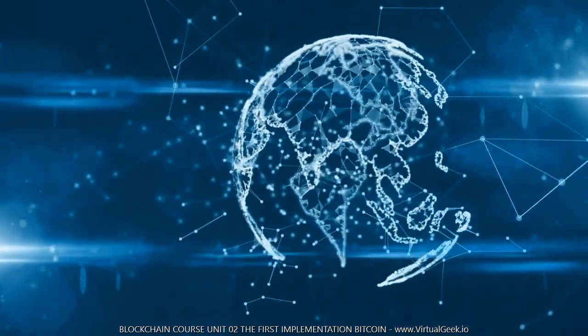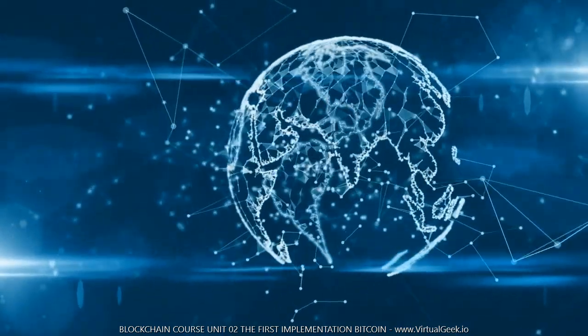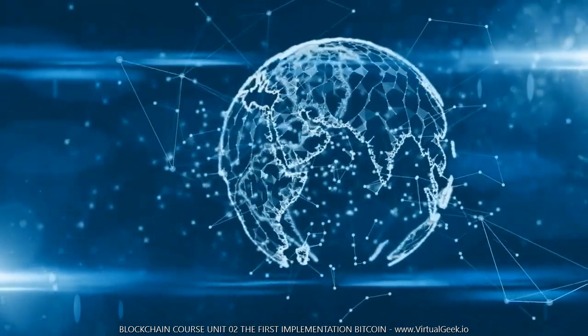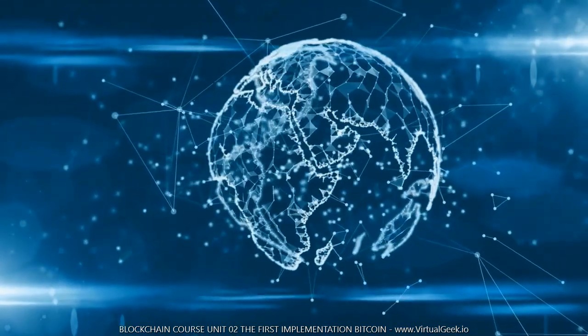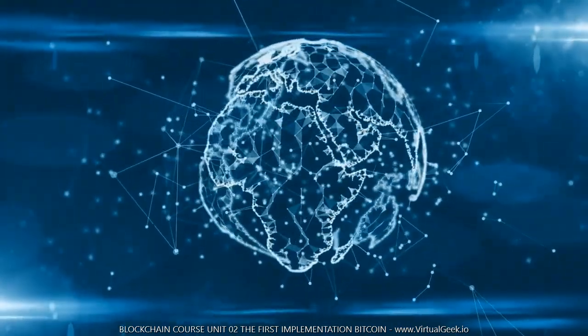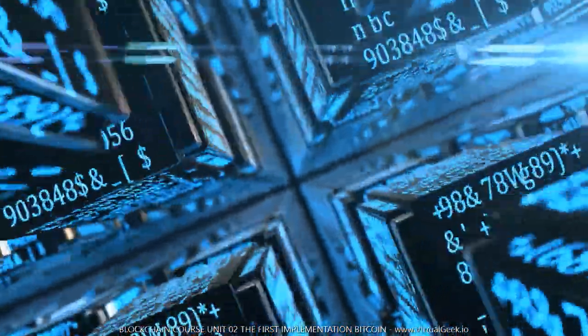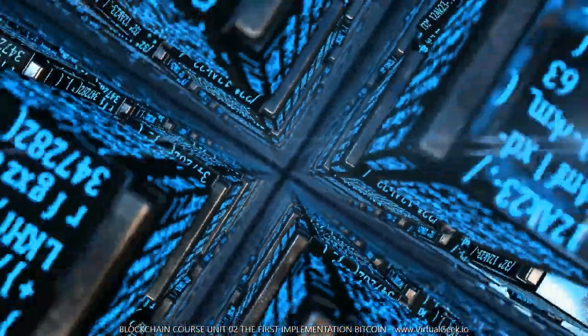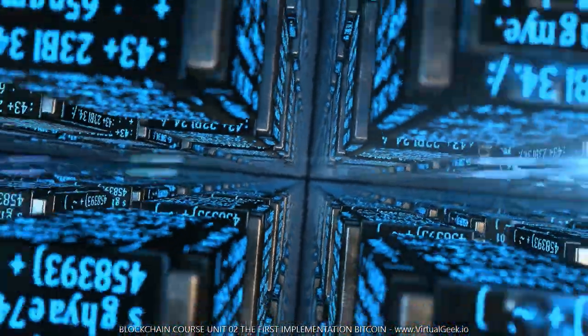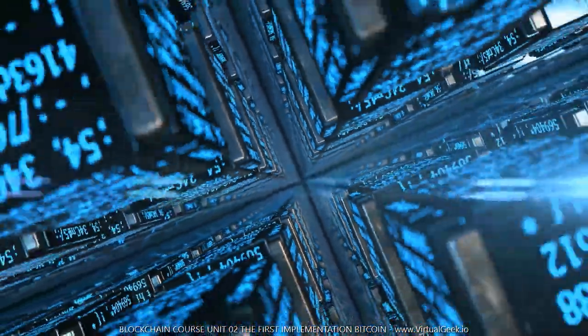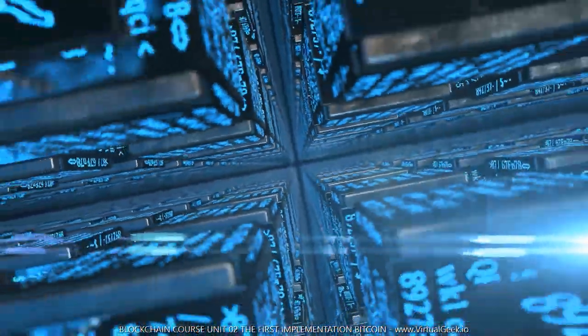This ledger is not only used to record and consult transactions, but is also essential for validating them and relaying them to the other nodes — computers — that make up the network. All this information is not stored on a single server, but is stored by all the nodes that make up the network.